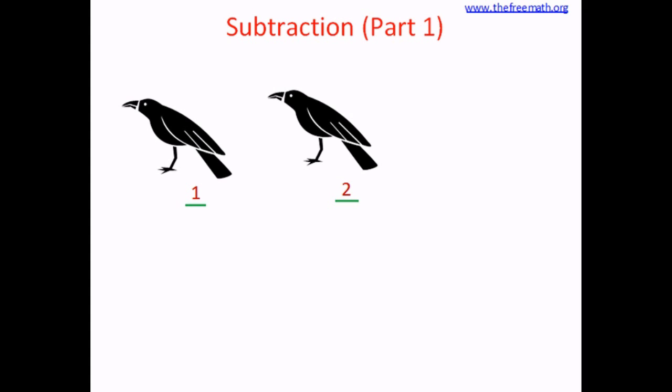When something goes away, it is called subtraction. First we had three crows, so we write three. Then one crow flew away, so we draw one sleeping line, which is called minus, and we write one because one crow flew away.